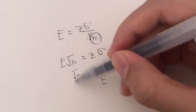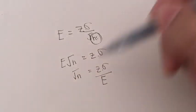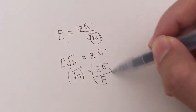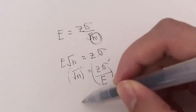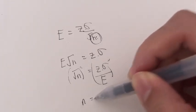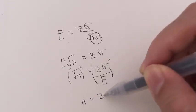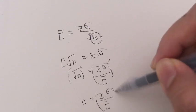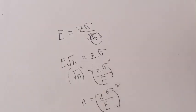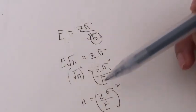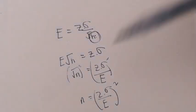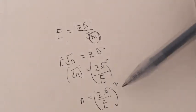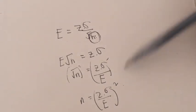So we have Z times sigma over E. Now we want to get rid of this square root sign, so we square both sides. We get n equals Z times sigma over E, all squared. So basically, if you want to find the appropriate sample size for a population mean, this is the formula.